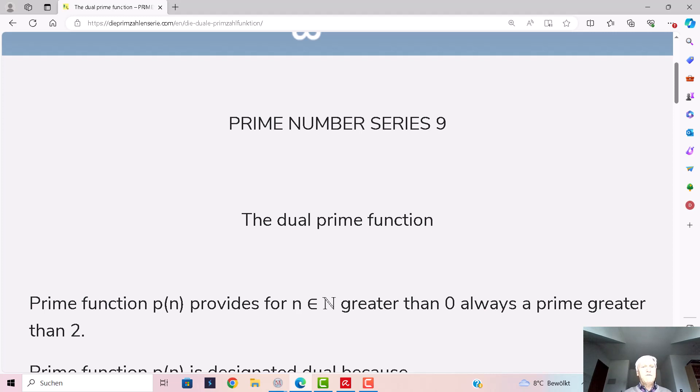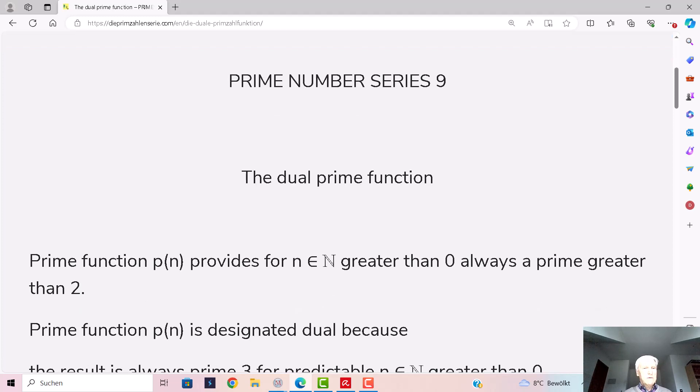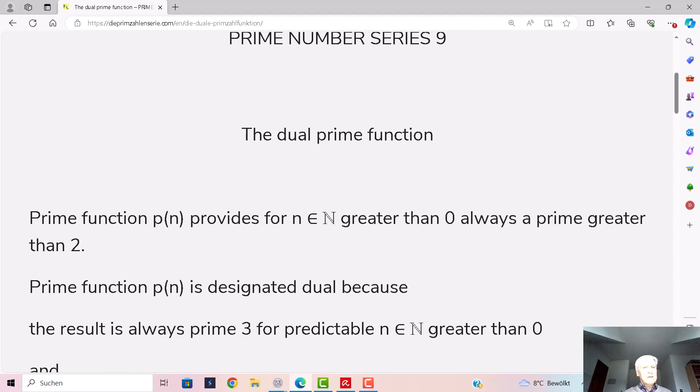This means infinite numbers. Prime function p(n) is designated dual because the result is always prime 3 for a predictable n greater than 0,